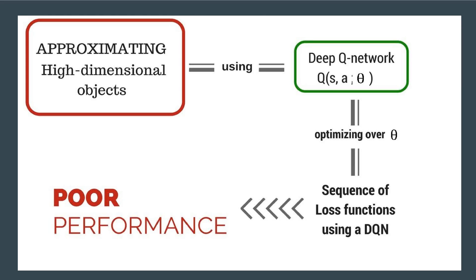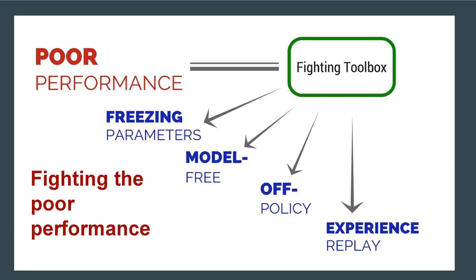Value functions are objects with high dimensionality. If we use a deep Q-network to approximate them, it performs poorly. To address this, we freeze the update of parameters while the online network is being updated through gradient descent.